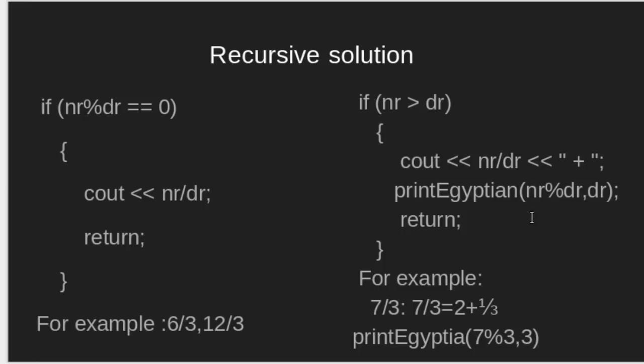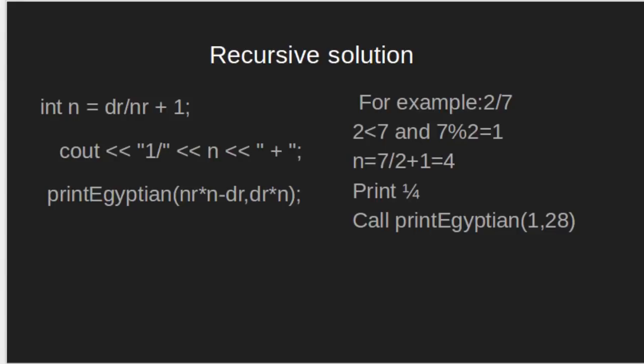Now, if numerator is not divisible by denominator and numerator is greater than denominator, then it should print the floor value of nr by dr and recursively call printEgyptian nr modulo dr, dr. For example, 7 by 3. Now, 7 divided by 3 equals 2. Remainder is 1 by 3. So, call printEgyptian 1, 3.